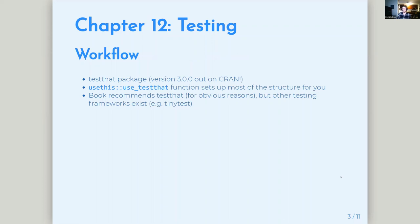The workflow the book endorses uses the testthat package. I think the book hasn't gotten around to really updating this chapter yet, because there are definitely some recommendations to use functions that are totally deprecated as of testthat 3.0. A cool thing with testthat 3.0 is it introduces the idea of an edition — a new field in your description file that specifies to use the new edition. The reason is that CRAN uses the newest version of testthat to test everyone's code, and some previously passing tests would break. So you have to opt in to using the new edition, and every major version like 4.0 will be a new edition.